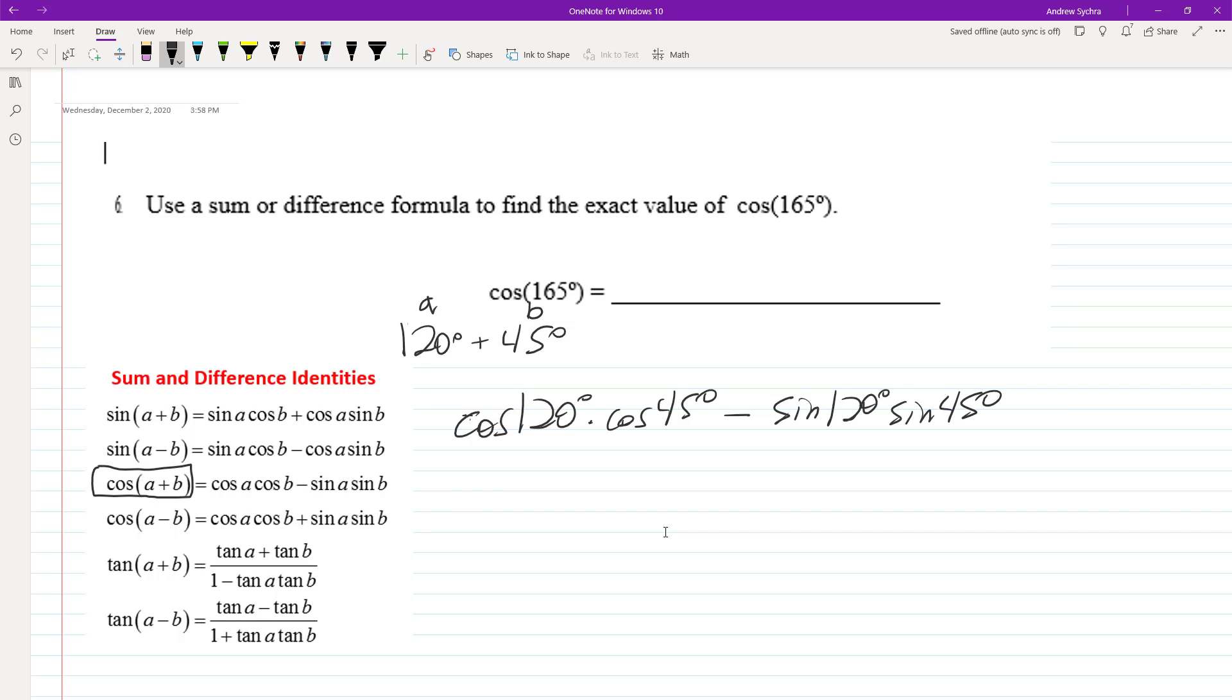This equals negative one-half times root 2 over 2 minus root 3 over 2 times root 2 over 2, which gives us negative root 2 over 4 minus root 6 over 4.